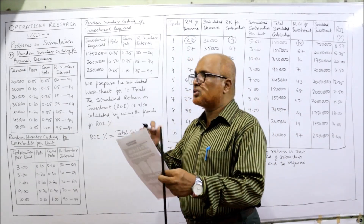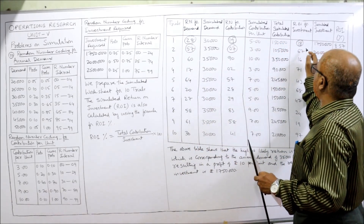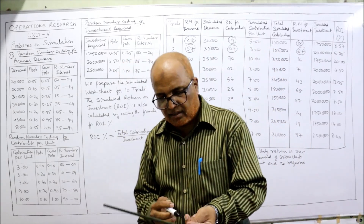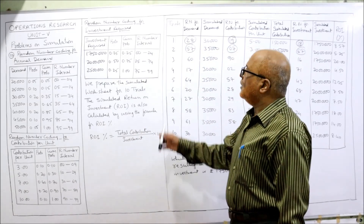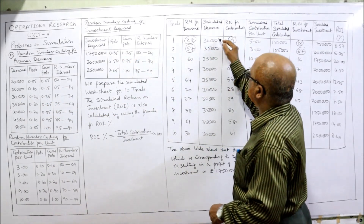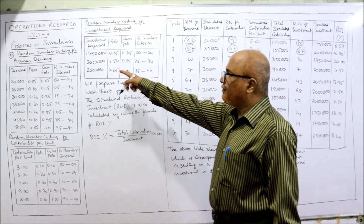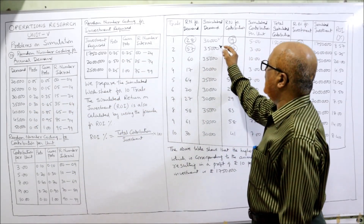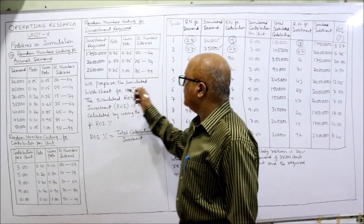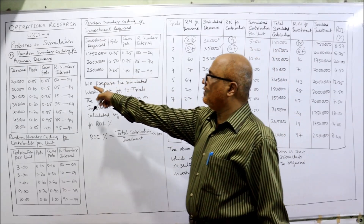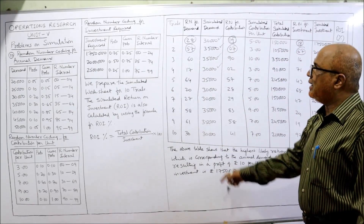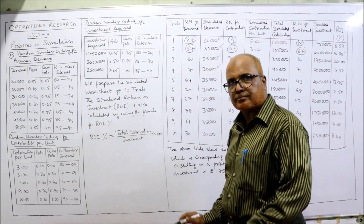For the second trial, random numbers 57, 07, and 67 are taken. Similarly, random numbers for each subsequent trial are taken in groups of three. Locating 28 in the demand interval: it falls in 15–34, so simulated demand is 30,000. Random number 57 falls in 35–64, giving demand 35,000. Random number 60 also falls in 35–64, giving 35,000. Random number 17 falls in 15–34, giving 30,000. All demands are simulated this way.